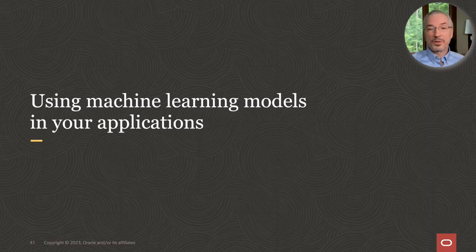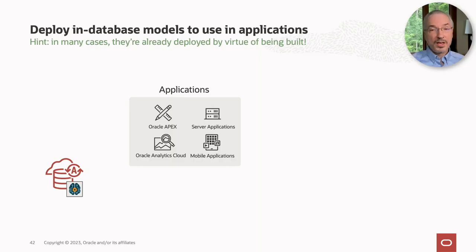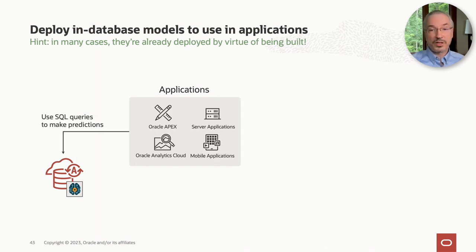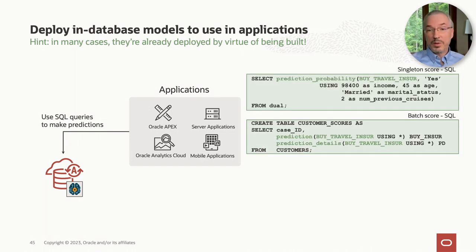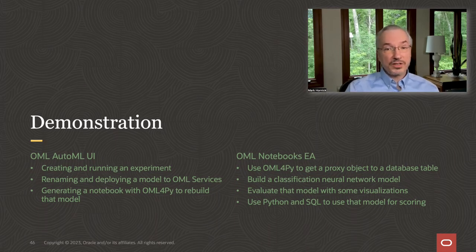Now let's explore options for embedding machine learning models in applications. When it comes to modeling and production-ready deployment, there are multiple ways to produce and consume models in OML. With in-database models, perhaps the simplest way is to write a SQL query to make predictions — for individual scores or batch scoring of an entire table of customers, perhaps to prioritize them for a marketing campaign, using the prediction operators integrated with Oracle SQL and the model name. Marcus will now demonstrate the Oracle Machine Learning AutoML UI to build and deploy a model to OML Services, and OML notebooks with OML4Py for building, evaluating, and scoring a model.